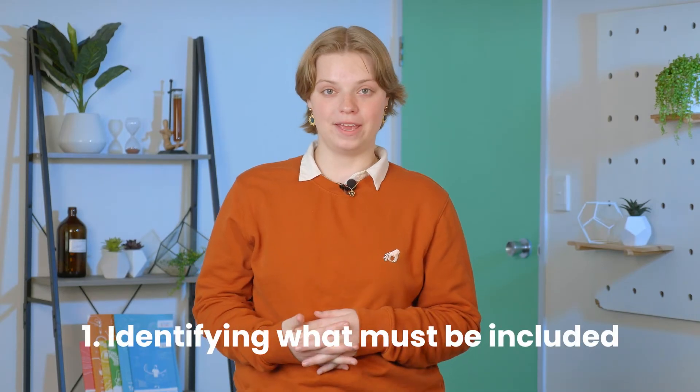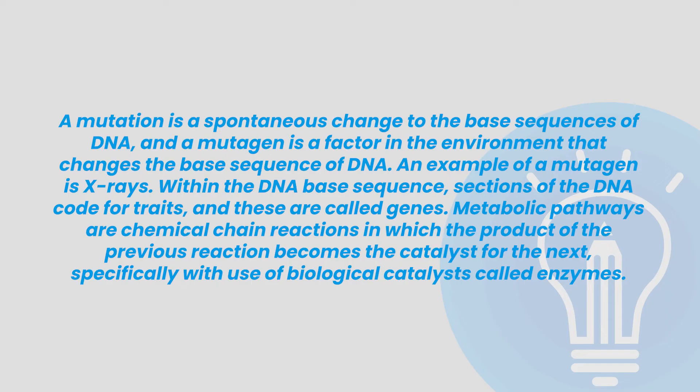Step 1: identifying what must be included. In the case of this question, we have been explicitly told about defining mutations and mutagens, but this question revolves around genetic code and metabolic pathways. Even though this isn't explicitly mentioned, including brief breakdowns of these two processes is also important. A mutation is a spontaneous change to the base sequence of DNA, and a mutagen is a factor in the environment that changes the base sequence of DNA. An example of a mutagen is X-rays. Within the DNA base sequence, sections of the DNA code for traits, and these are called genes. Metabolic pathways are chemical chain reactions in which the product of the previous reaction becomes the catalyst for the next, specifically with the use of biological catalysts called enzymes.